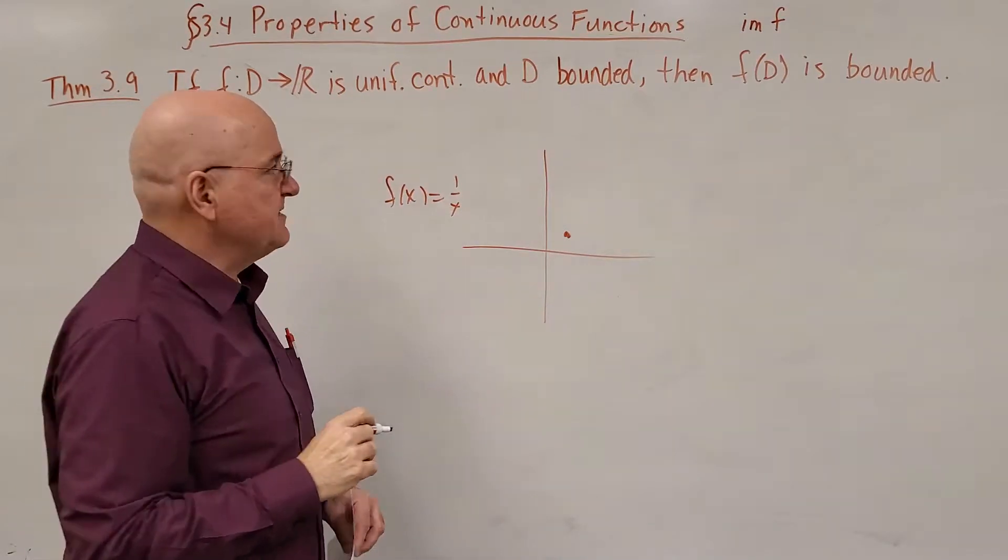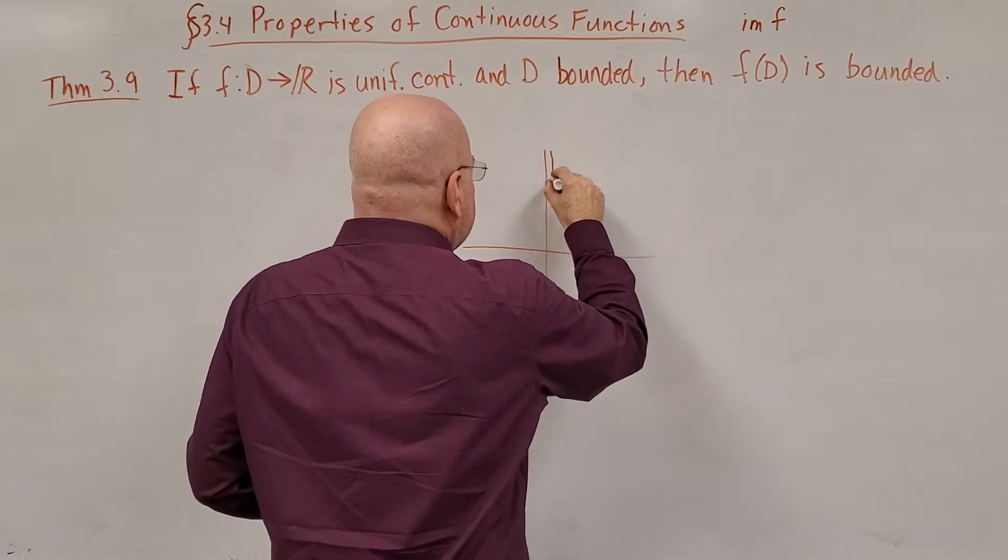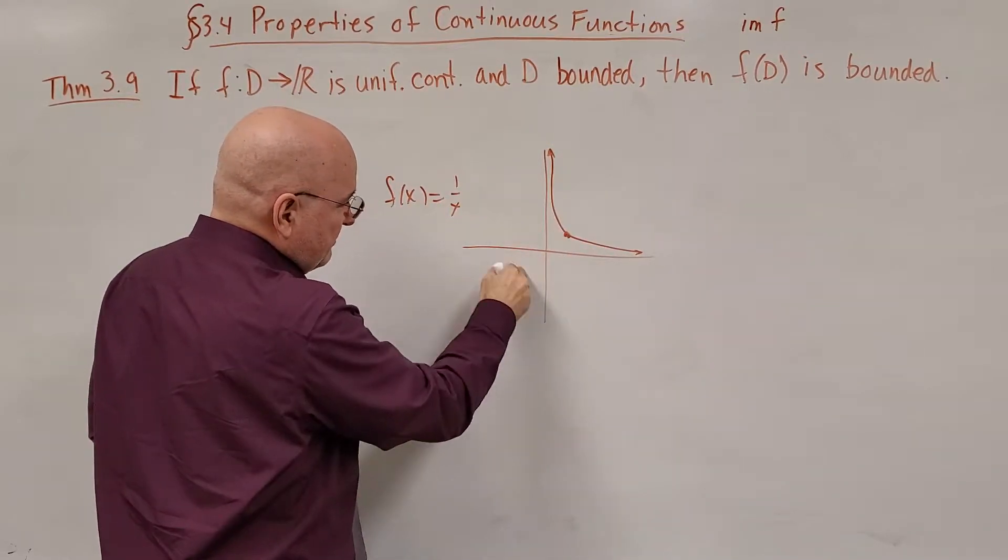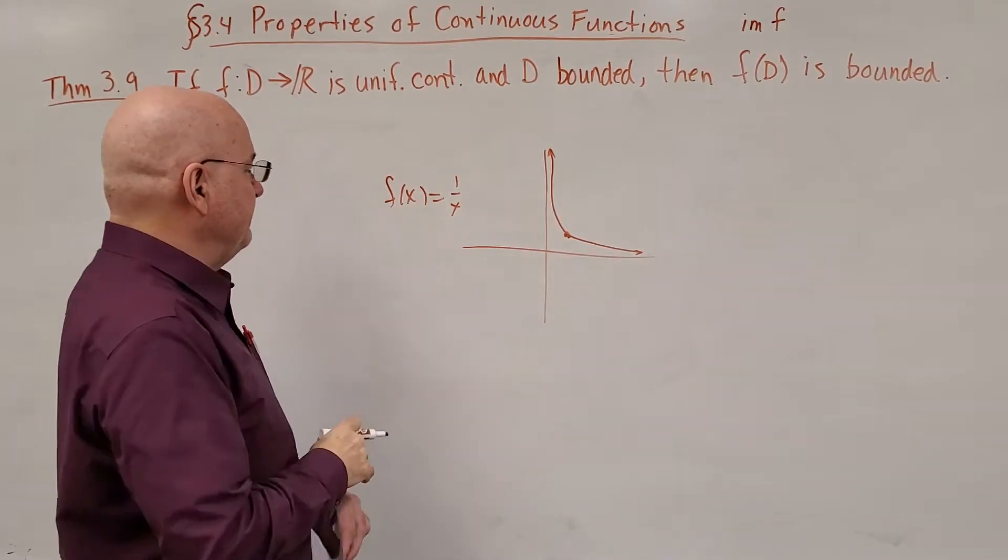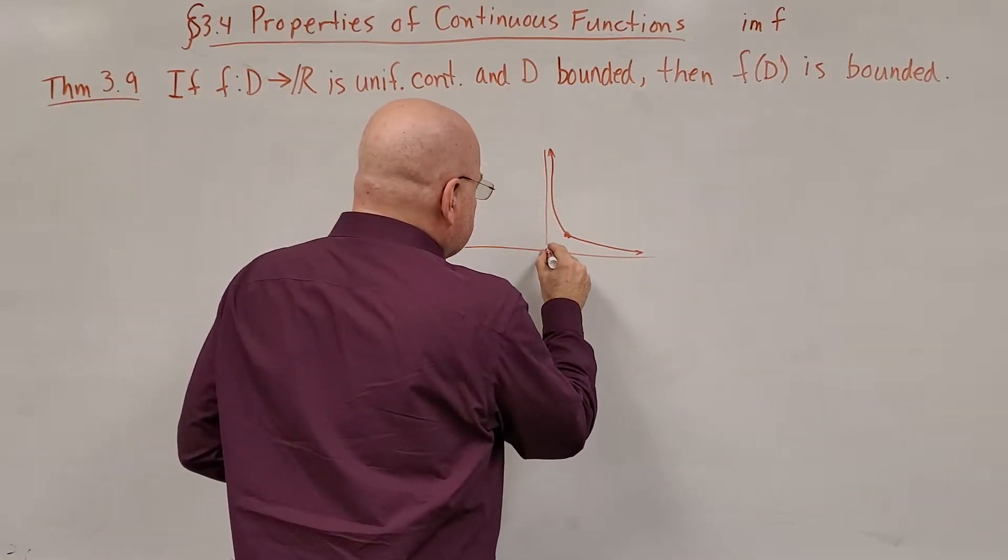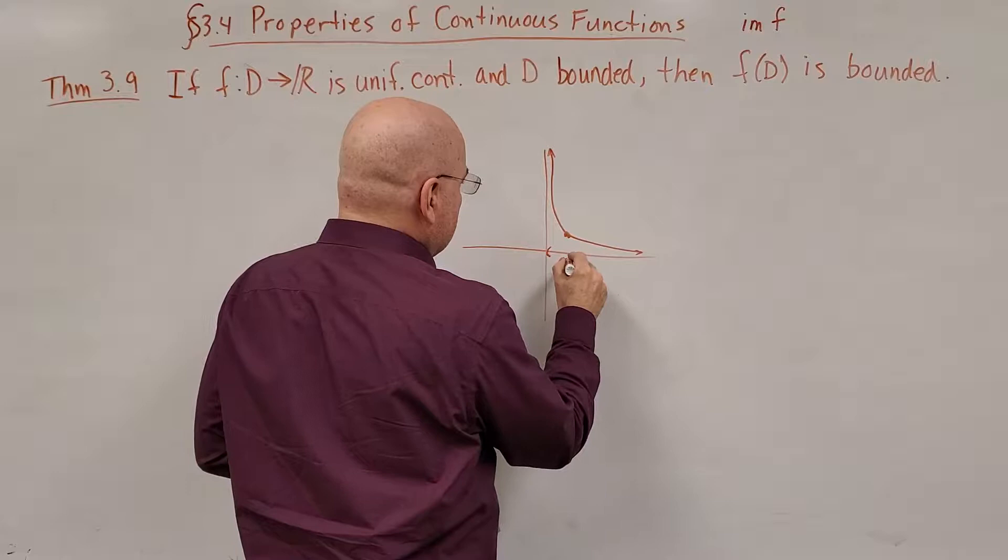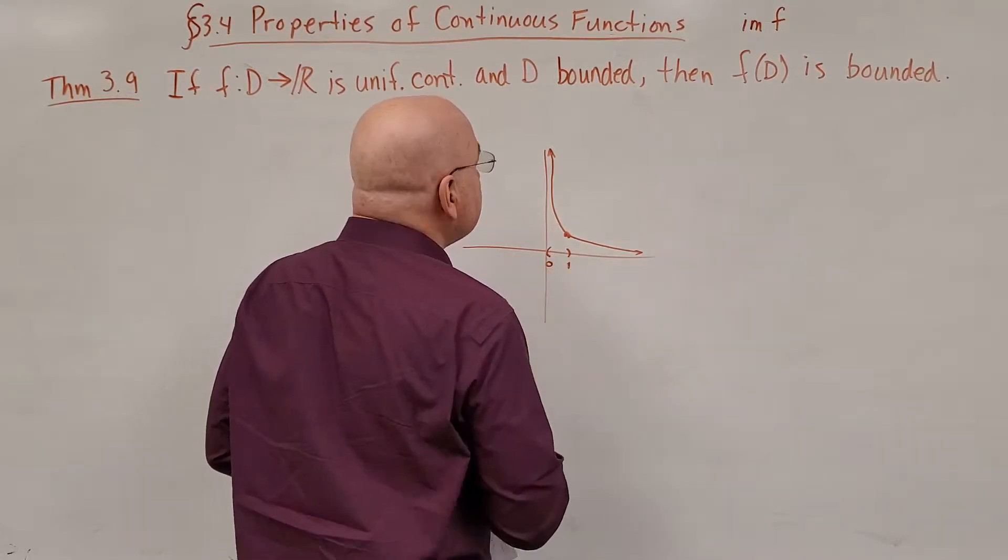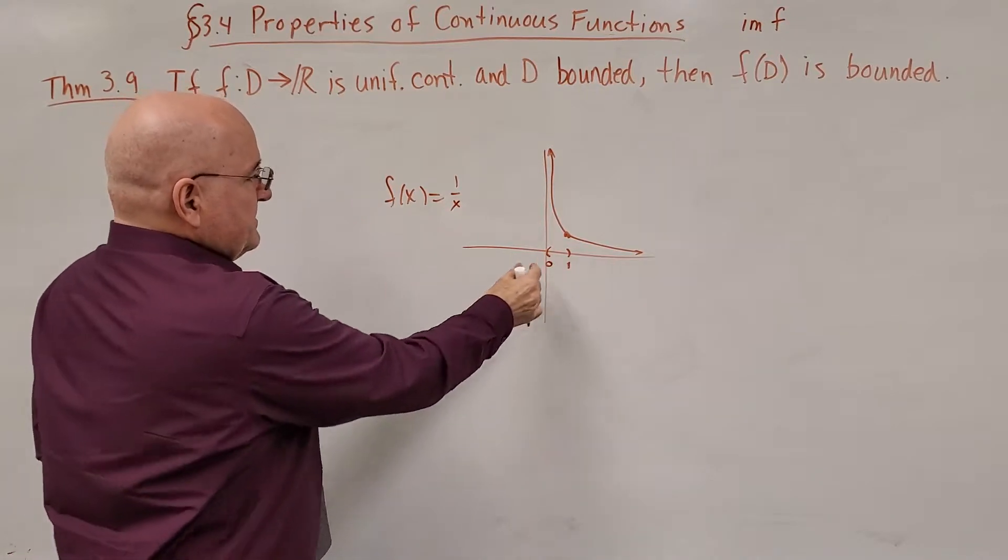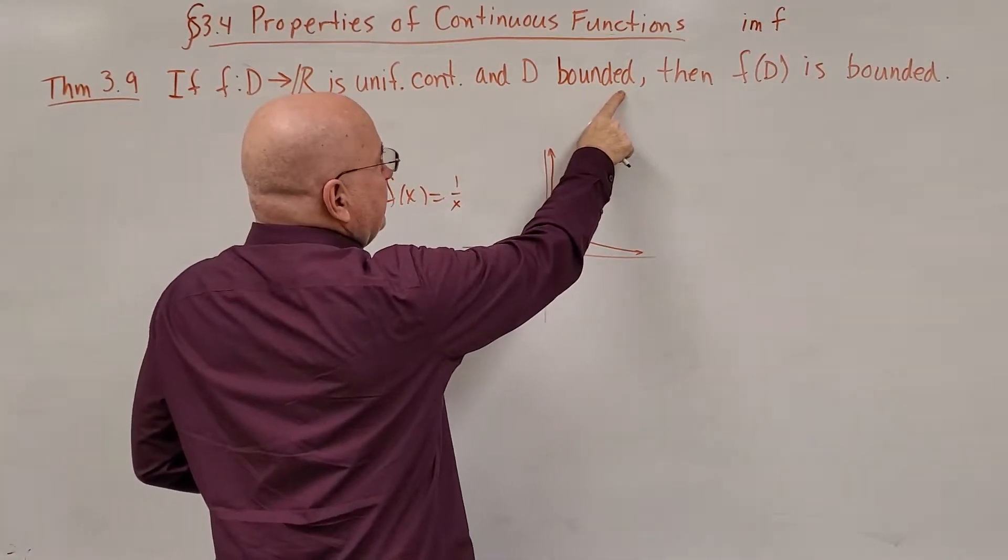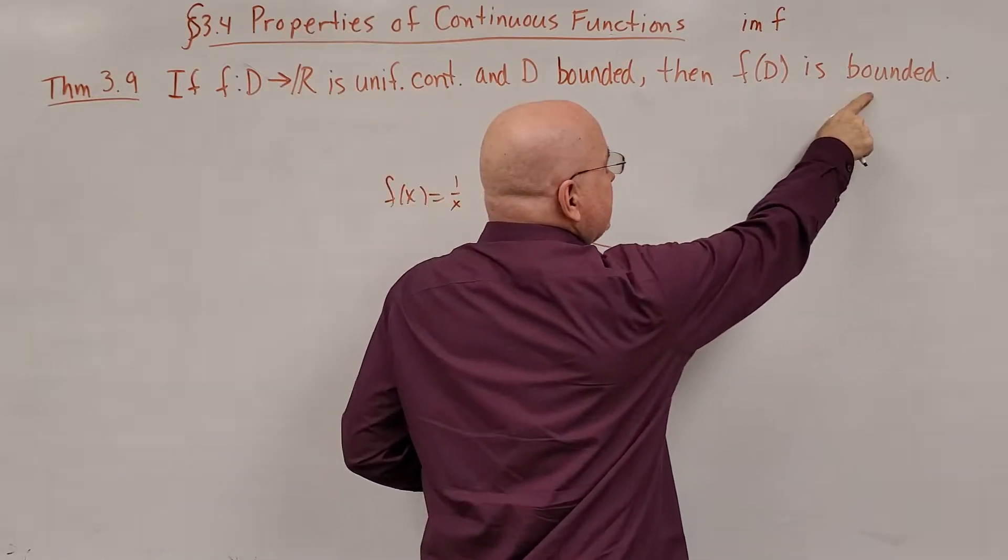(1,1) is one of the points on the graph, and I'm just going to look at it from the perspective of positive values of x. It also would be graphed down here for negative values of x. But if I look at this from, say, 0 to 1, (0,1) is clearly a bounded set. D is bounded, but f(D) is not bounded.